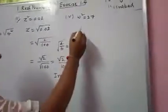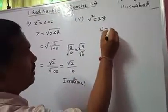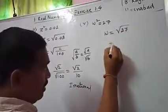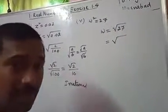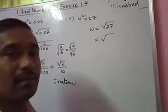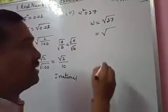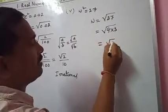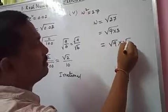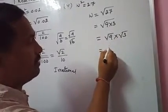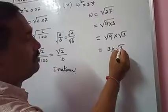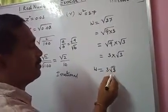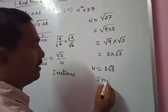W squared equals 27. So W equals root 27. We can write 27 as 9 times 3, giving root 9 into root 3. The value of root 9 is 3, so W equals 3 root 3. Since root 3 is irrational, 3 into root 3 is also irrational.